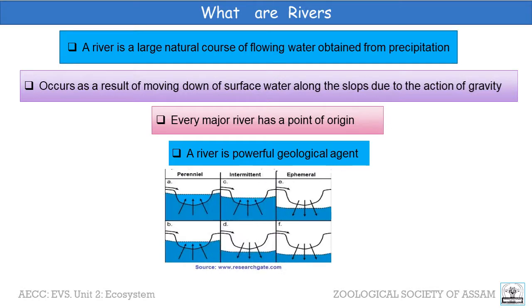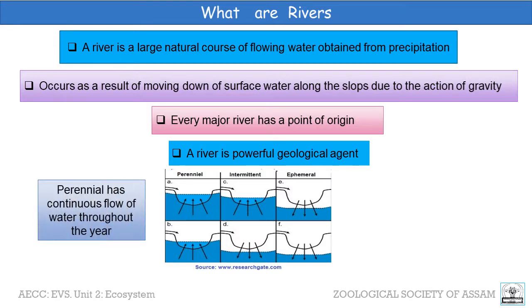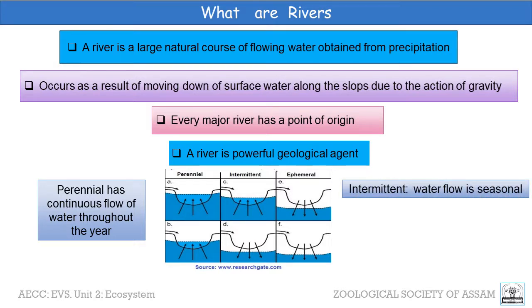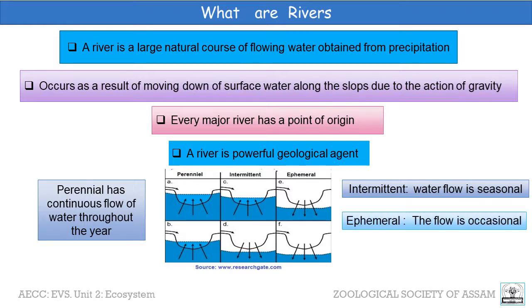As shown in the figure, rivers may be perennial, with continuous flow of water throughout the year, or intermittent — also termed as intermittent streams — where water flow is seasonal, or may be ephemeral streams, where the flow is occasional.